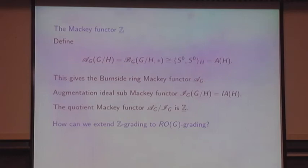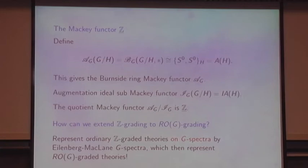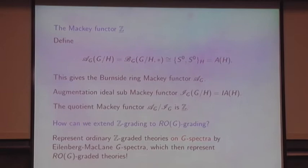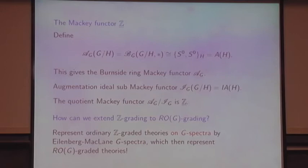What we've shown is that the constant coefficient system extends to a Mackey functor. What we haven't proven is how to use that to extend our theory. The idea is to represent an ordinary Z-graded theory on a category of G-spectra — a good homotopy category of G-spectra — by Eilenberg-MacLane G-spectra. These then represent the ROG-graded cohomology theories we're after. I want to review what spectra are first, since I can't assume that everybody knows that.